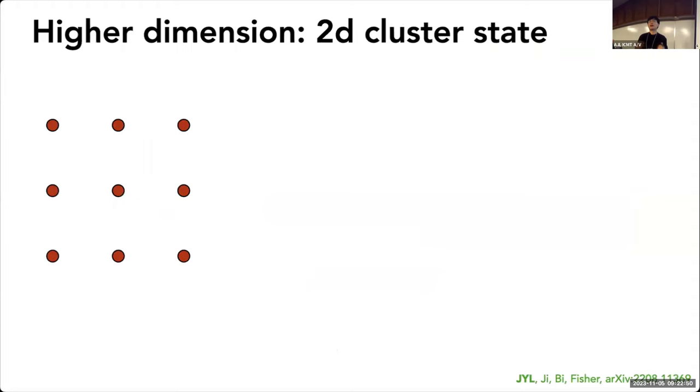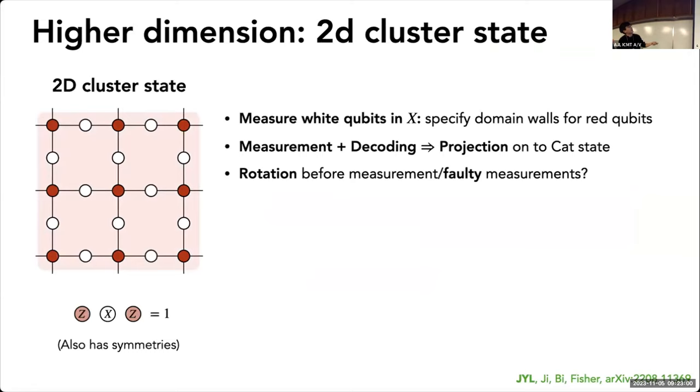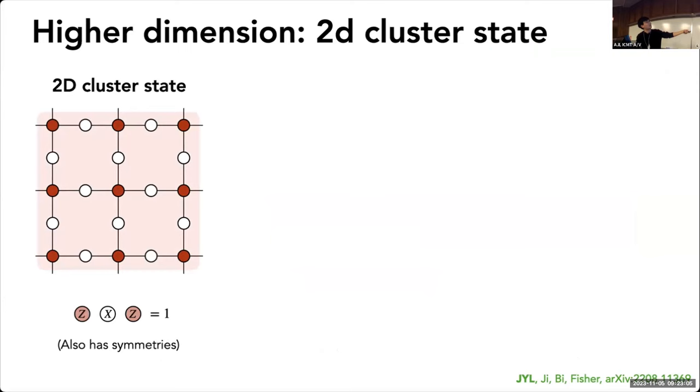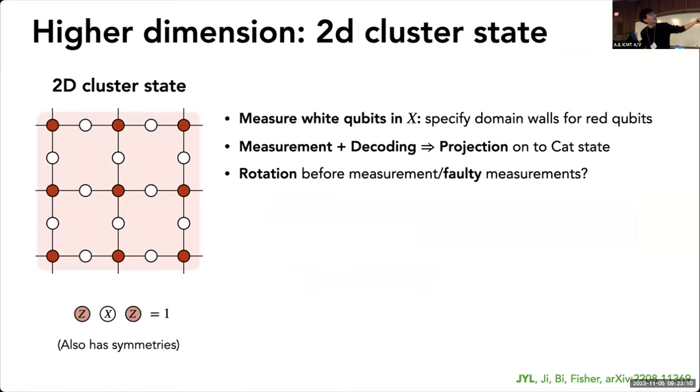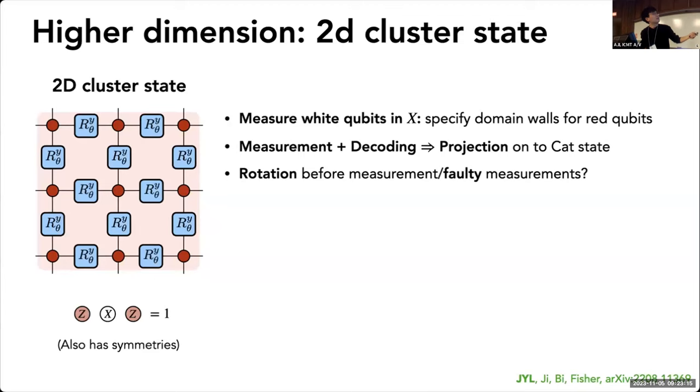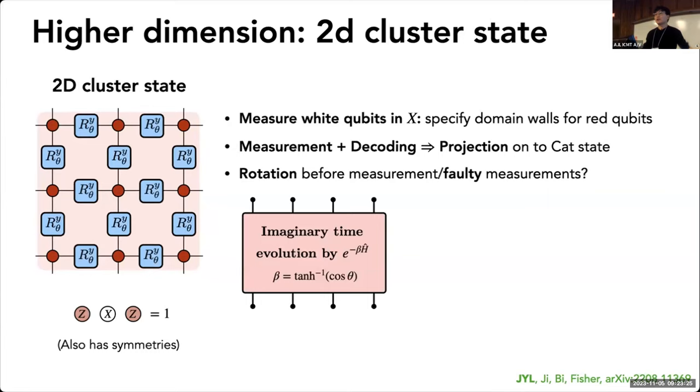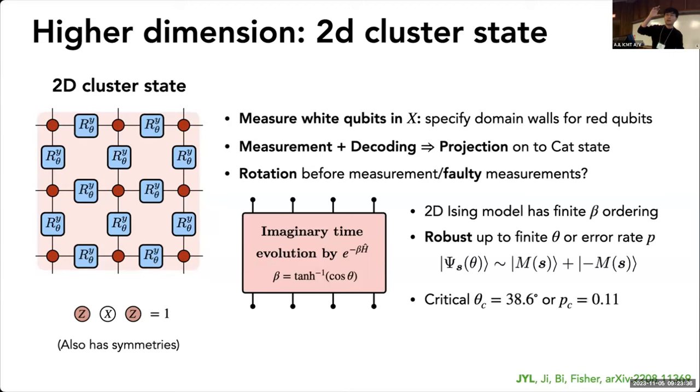But in one higher dimension, there is long-range correlation for Ising order. So indeed, I go to higher dimension, arrange qubits in the vertices of a square lattice, assign qubits on the edges, and entangle them in such a way that you develop ZXZ equals one correlation. You measure all the white qubits in X space, and you're able to get the cat state. But now you can imagine the measurement outcome being corrupted, and it can be mapped into imaginary time evolution by a two-dimensional Ising model Hamiltonian. We know there's a finite temperature transition behavior, so I can show there's a finite rotation angle where you can still get some cat state out of it.